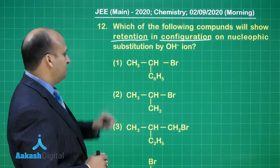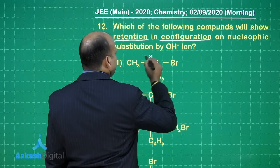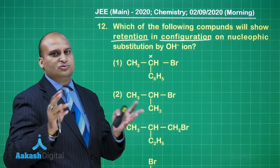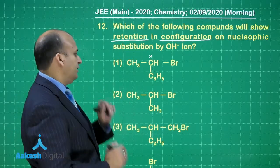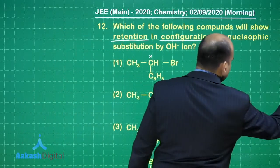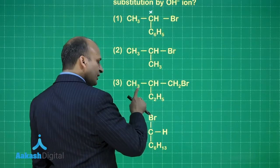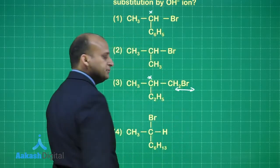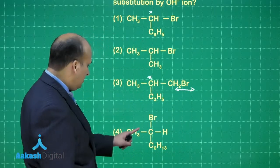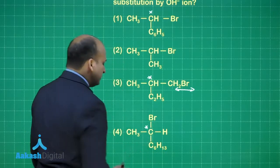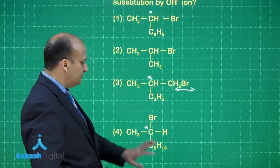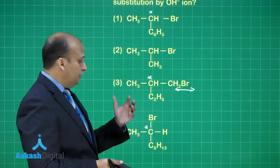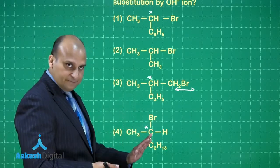So over here you look at this particular case, first case. Is this carbon chiral? Yes, it is chiral. We will talk about it later on, whether it is SN1, SN2, retention will take place or not. First let us look at the chiral carbon. Is this chiral? No. Third case, is there a chiral carbon over here? Yes, there is a chiral carbon, but the substitution is not happening on the chiral carbon. Next case, is this chiral? Yes, this is chiral. Substitution is happening on the chiral carbon? Yes. If the substitution is happening over here, it can go via SN1 or SN2, and there can be retention or inversion in configuration.